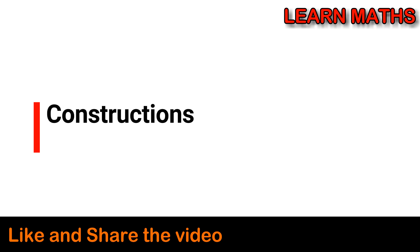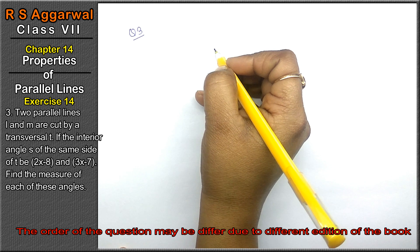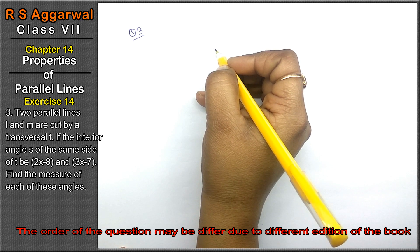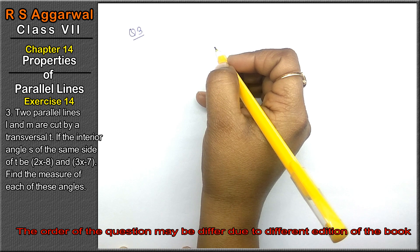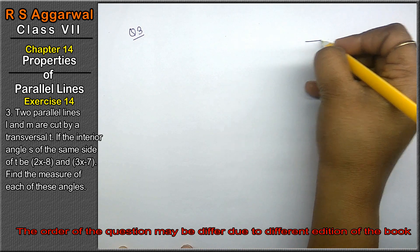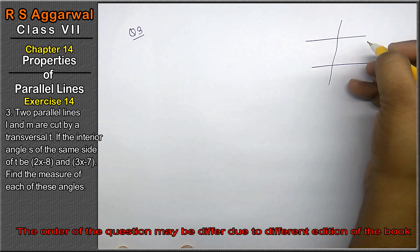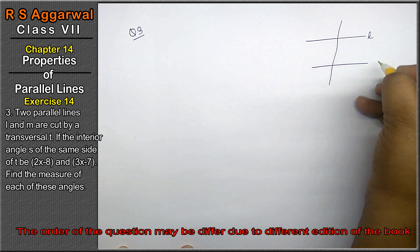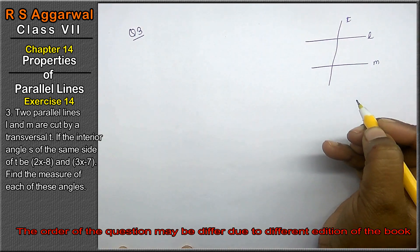Let's do question number 3 of exercise 14, that is properties of parallel lines. Question number 3 is: two parallel lines L and M are cut by transversal T. Again, two parallel lines L and M and their transversal T.